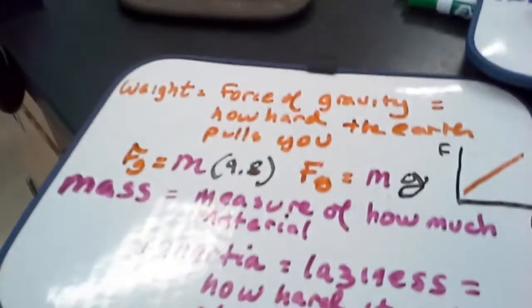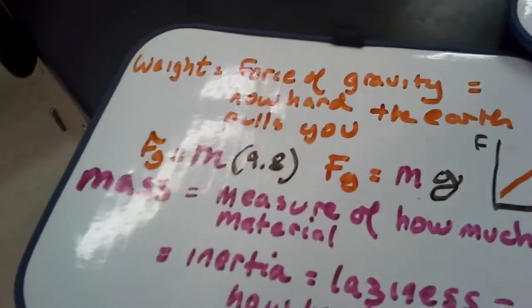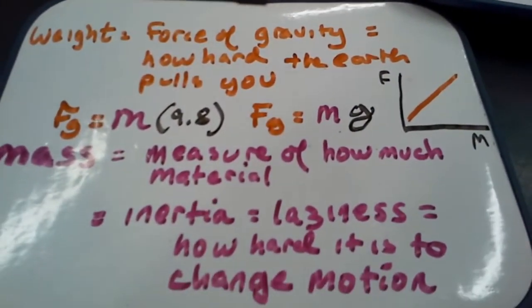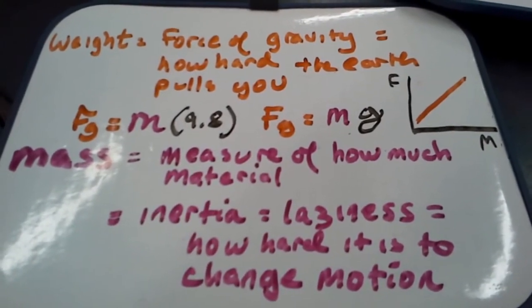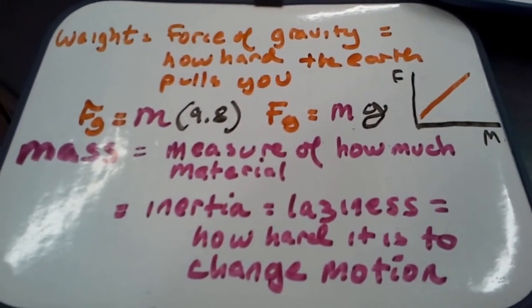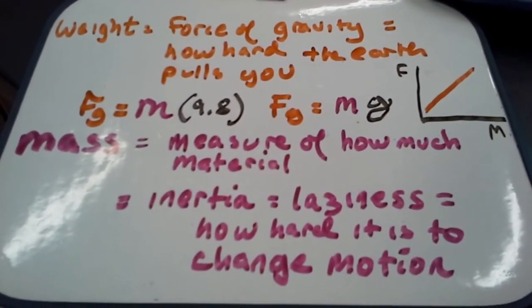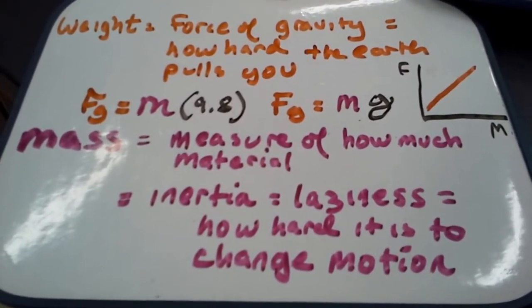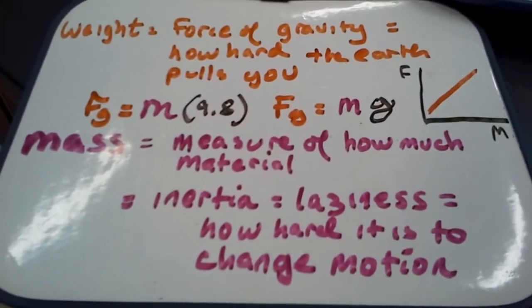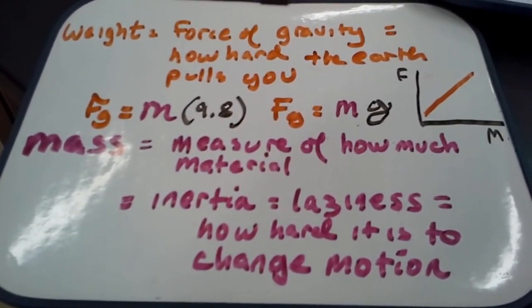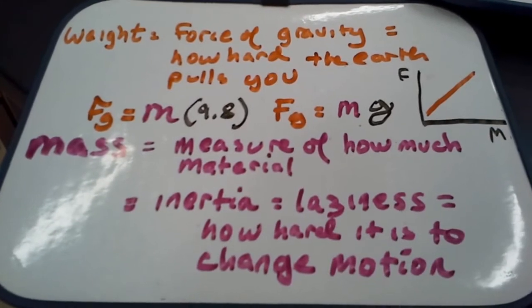Here's a couple more definitions. Weight, the force of gravity, is literally how hard the Earth is pulling on you. Mass, in chemistry, you've learned it as a measure of how much material you've got. And it's kind of like that in physics as well. But it's this other thing, too, that we call inertia.